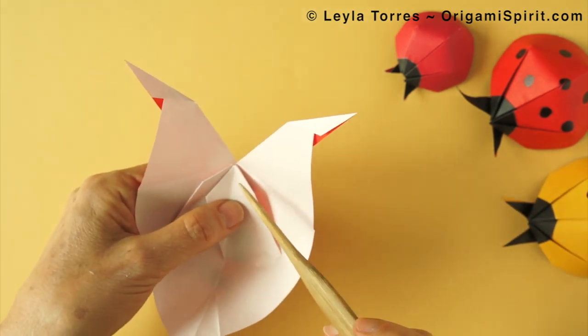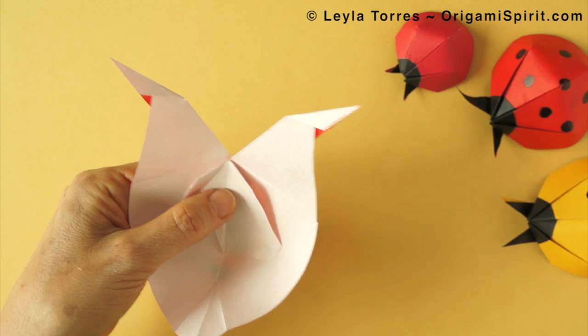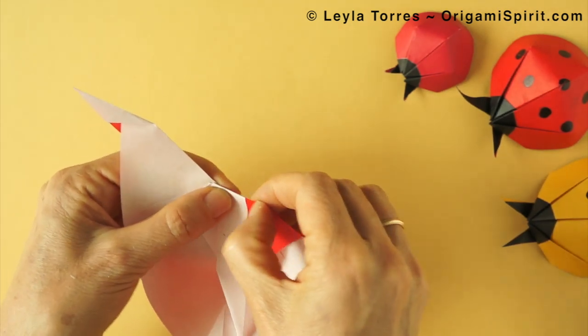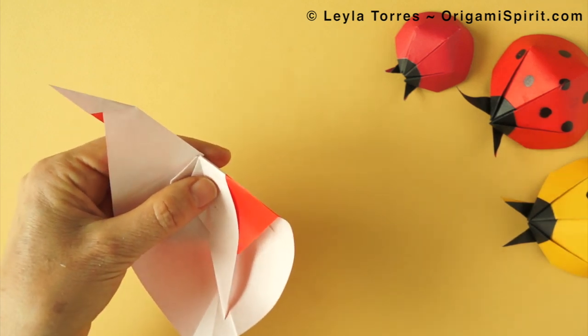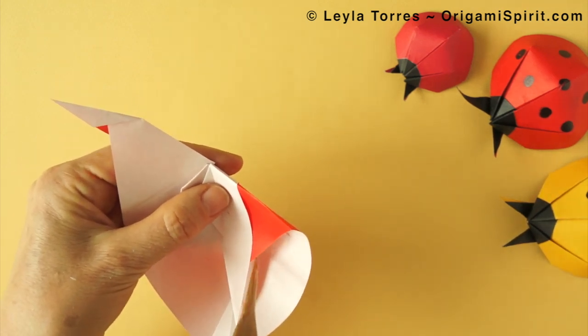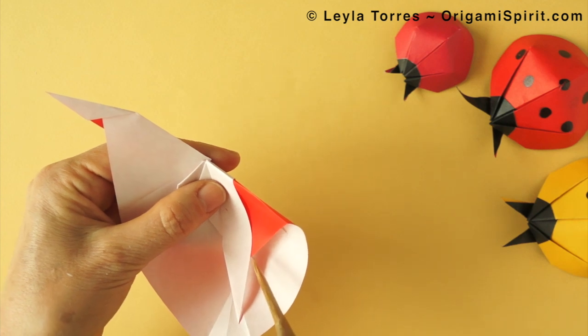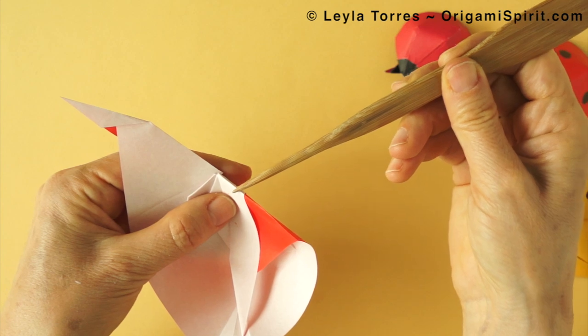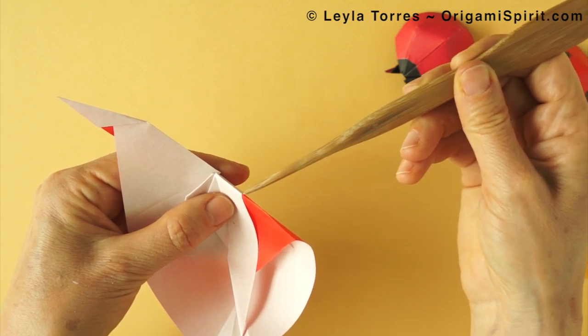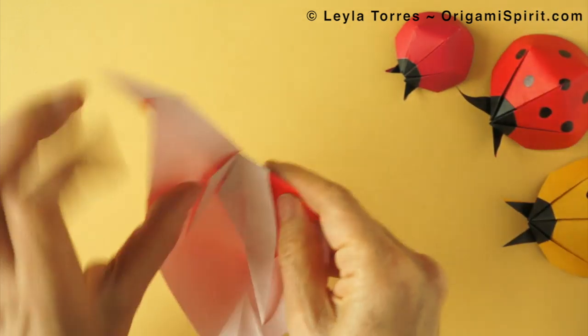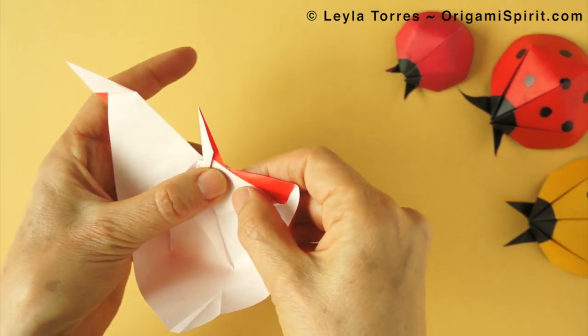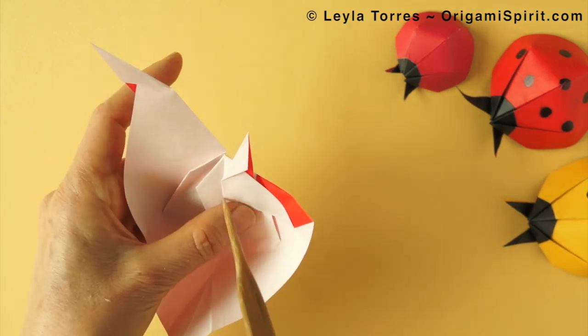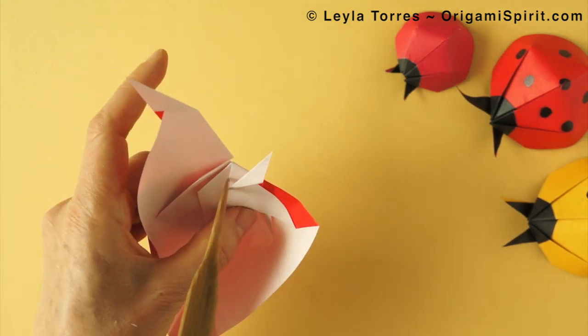We have an existing crease along here. Bring the flap down along that crease and here we have this angle. This is an obtuse angle. That angle is going to match the point where there is a change of color right on this edge and we set the crease. This edge also matches with itself.